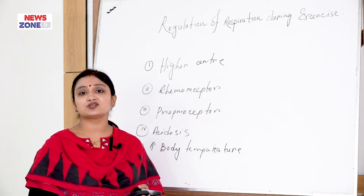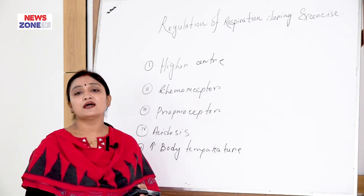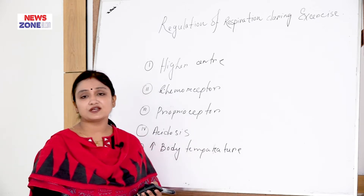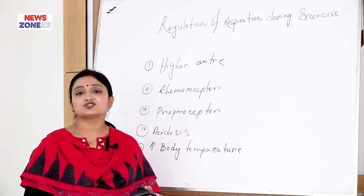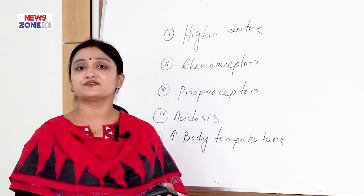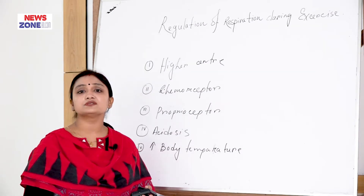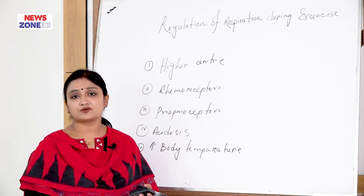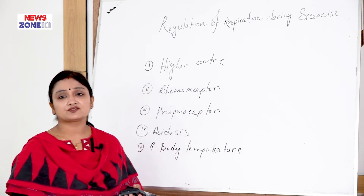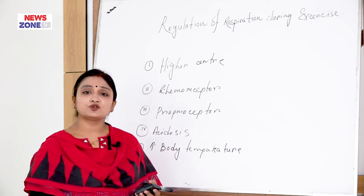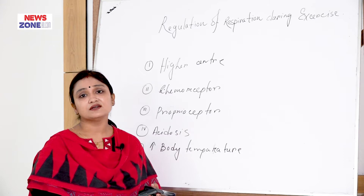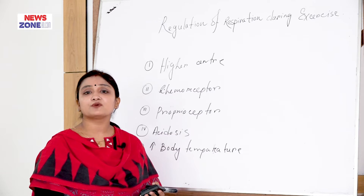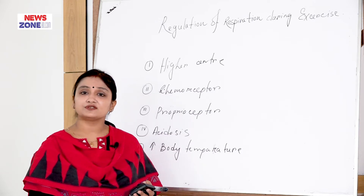We have already learned about the chemical regulation of respiration — that is, what chemical changes stimulate the chemoreceptor and thereby stimulate respiration. Those chemical changes are: if the partial pressure of carbon dioxide increases, if the partial pressure of oxygen decreases, if hydrogen ion concentration increases, and if temperature increases. These factors cause stimulation of chemoreceptors. We have already learned about the types of chemoreceptors — central and peripheral — and their mechanisms.